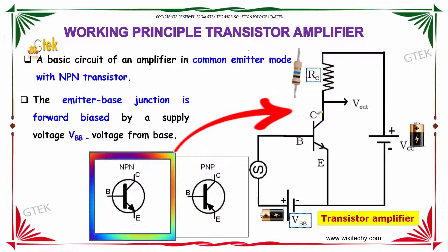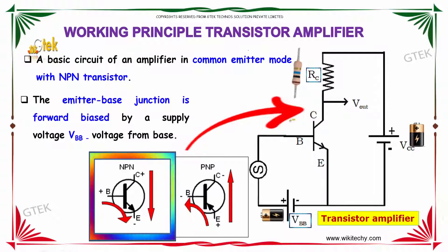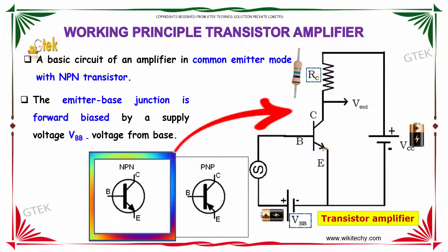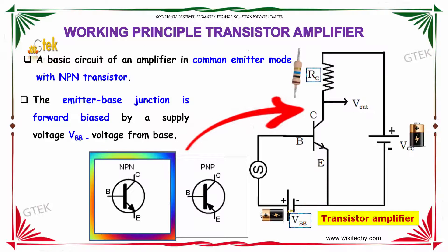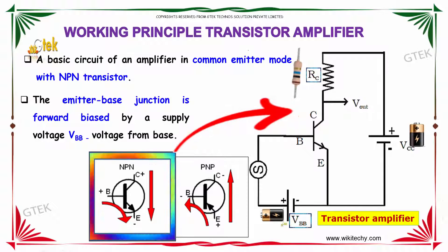So here is the NPN transistor shown here from emitter is going out, that's NPN. The emitter base junction is forward biased by a supply voltage of VBB from base.